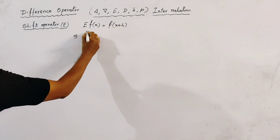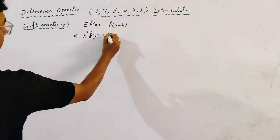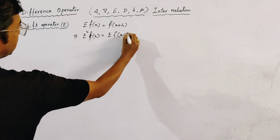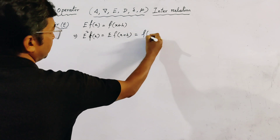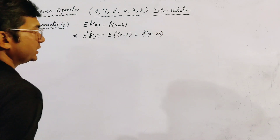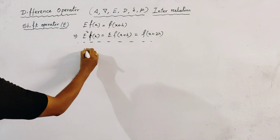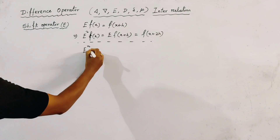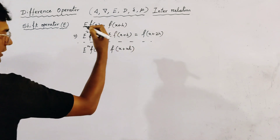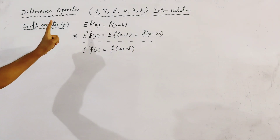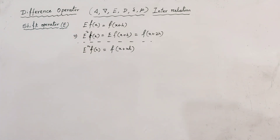E squared of f(x) is given by E of f(x + h), and this operator shifts one more time, giving f(x + 2h). In similar manner, we get the nth order shift operator: E to the power n of f(x) is given by f(x + nh). This is the definition of shift operator — first order, second order, and so on up to nth order.